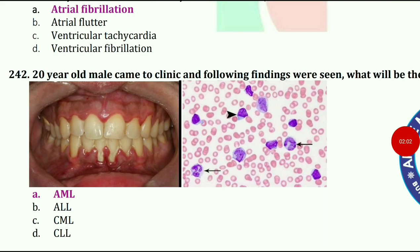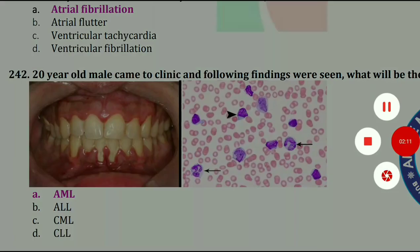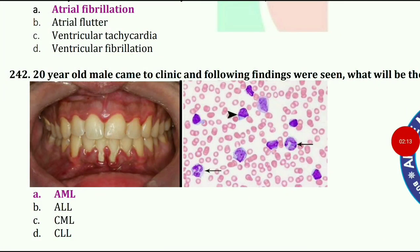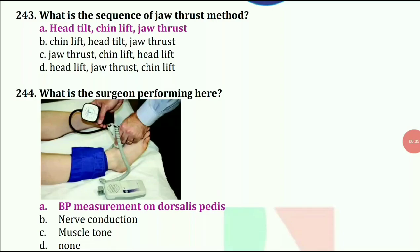20-year-old male came to clinic and following findings were seen. What will be the diagnosis? The answer is AML — acute myeloid leukemia.